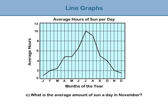Question c: What is the average amount of sun a day in November? We read along the x-axis to November, and then go up the line on the graph, and then read the value from the y-axis. November had an average of two hours of sun a day.